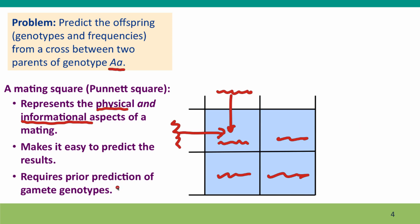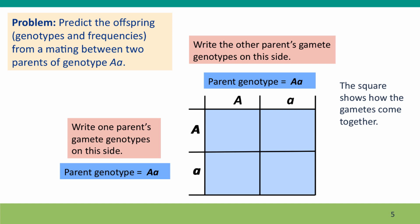It also makes it easy to keep track of the proportions. The one factor to remember though is that you have to first predict the gamete genotypes before you can use the mating square. The parents are both genotype big A little a. They can only produce two kinds of gametes, big A gametes and little a gametes, and they're each going to represent half of the total gametes. We can write the gamete types into the sides of the square. One parent's gamete genotypes on the side, the other parent's gamete genotypes on the top.